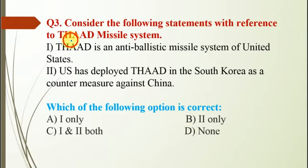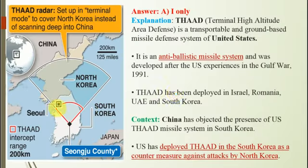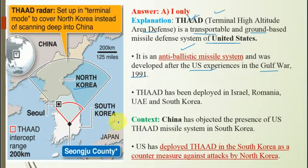Question number 3 is with reference to the THAAD missile system. Statement 1: THAAD is an anti-ballistic missile system of the USA. Statement 2: The USA has deployed THAAD in South Korea as a counter-measure against China. The correct option is A — Statement 2 is incorrect because THAAD was deployed in South Korea as a counter-measure against North Korea, not China. THAAD stands for Terminal High Altitude Area Defense and is a transportable, ground-based missile defense system developed after US experiences in the Gulf War of 1991. It has been deployed in Israel, Romania, UAE and South Korea. China has objected to the presence of the US THAAD system in South Korea.